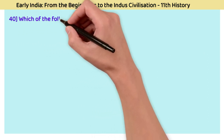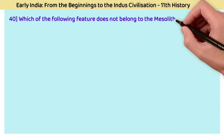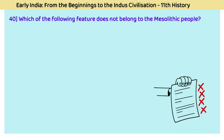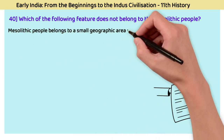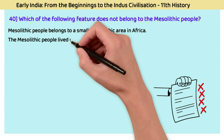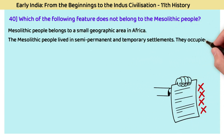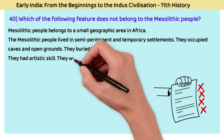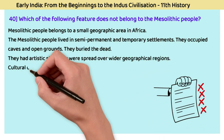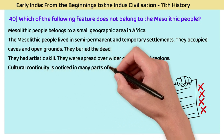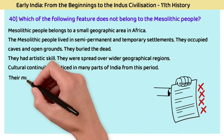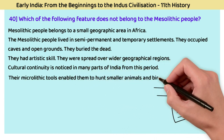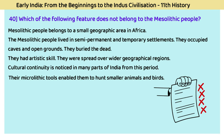Question 40: Which feature does not belong to the Mesolithic people? The answer is that Mesolithic people belong to a small geographic area in Africa. The Mesolithic people lived in semi-permanent and temporary settlements, occupied caves and open grounds, buried the dead, and had artistic skills. They spread over wider geographical regions, and this cultural continuity is noticed in many parts of India. Their microlithic tools enabled them to hunt smaller animals and birds.